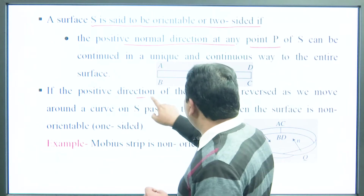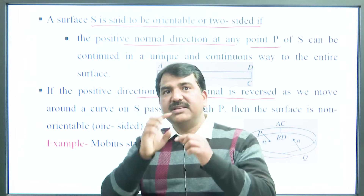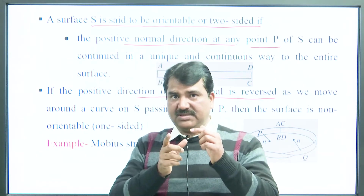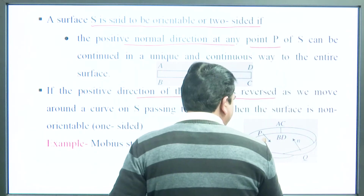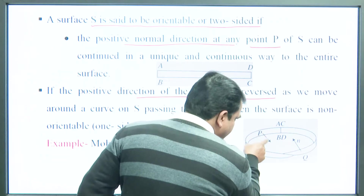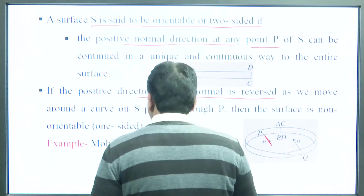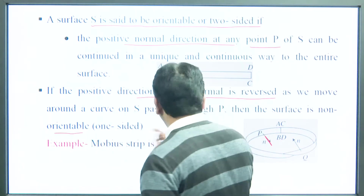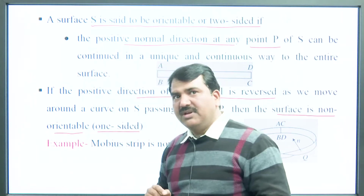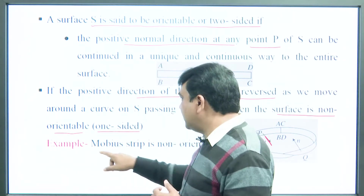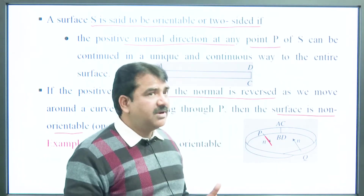If the positive direction of the normal is reversed when you move along the surface and return to the same point, then the surface is non-orientable, also called a one-sided surface. The example of this is the Möbius strip, which is the non-orientable or one-sided surface.